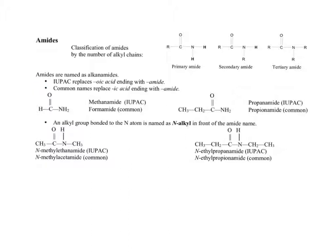The IUPAC naming system for amides involves naming the longest chain, dropping the -e, and adding the word amide. For example, a one-carbon chain gives methylamide and a three-carbon chain gives propylamide. For secondary and tertiary amides, we name the N-alkyl groups for the chains that come off the nitrogen. In this example, the longest chain is two carbons, giving an N-ethylpropylamide structure.